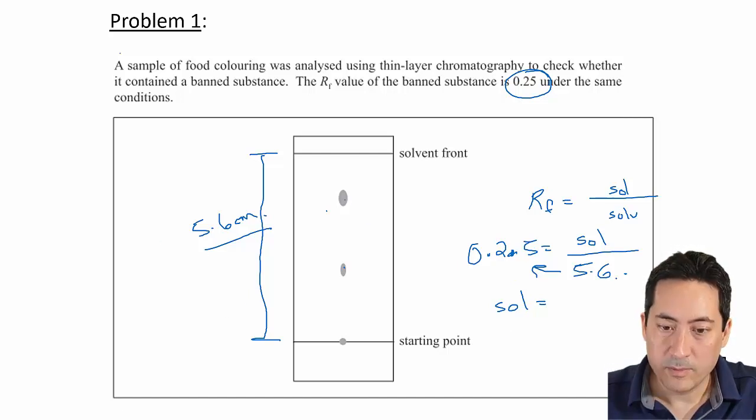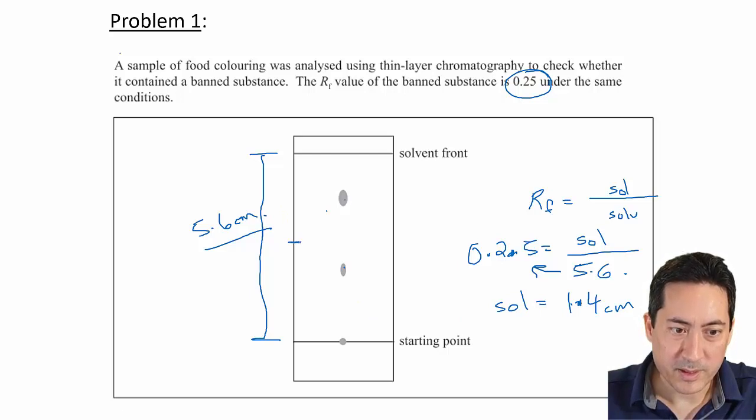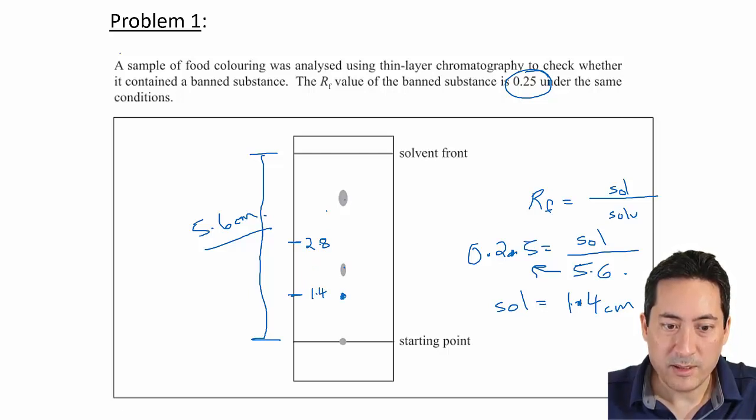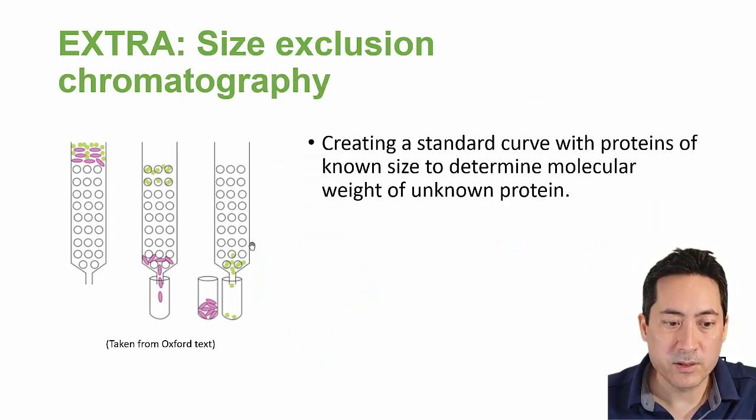So I'll just grab the calculator and that works out to 1.4 centimetres. So again, I don't have a ruler on me right now. So 5.6, that's about 2.8 halfway. And halfway again is about 1.4. So I would say that it's there. And therefore the patient does not have the banned substance. That chemical is not the substance that is banned.